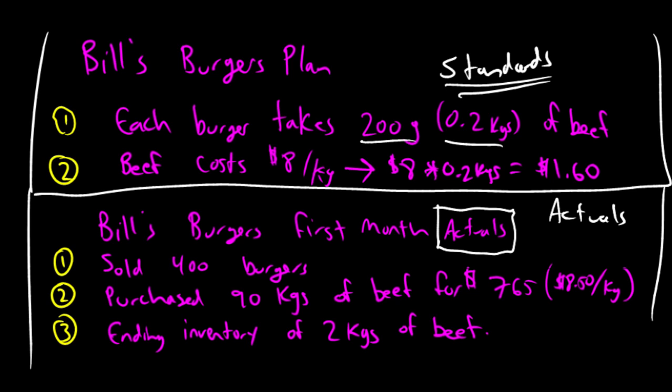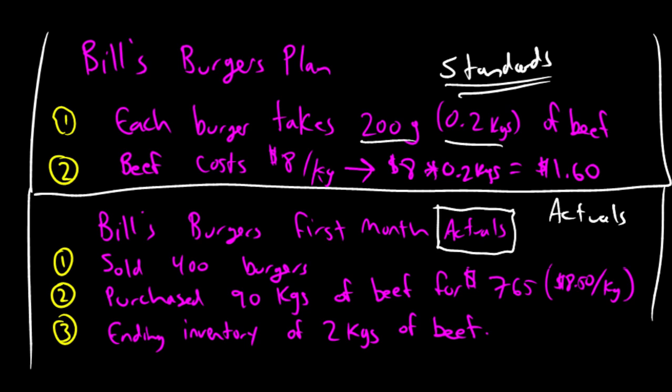So, Bill's got to say to himself, did I have a good month or not? Was I efficient or not? And how might Bill know? Well, there's obviously a way for that, and that would be to do his direct materials variances. And so, that's the focus of our video here. Labor and overhead will be covered in the subsequent couple of videos. So, direct materials variances.